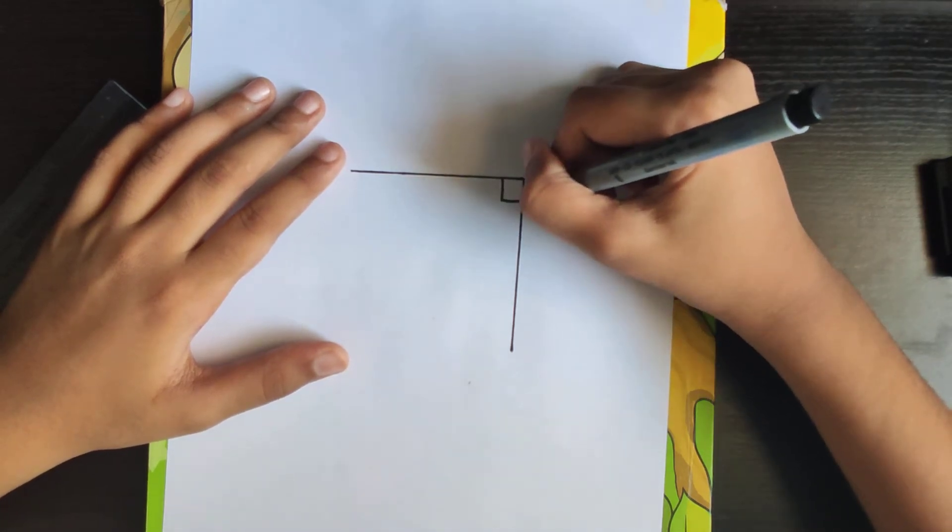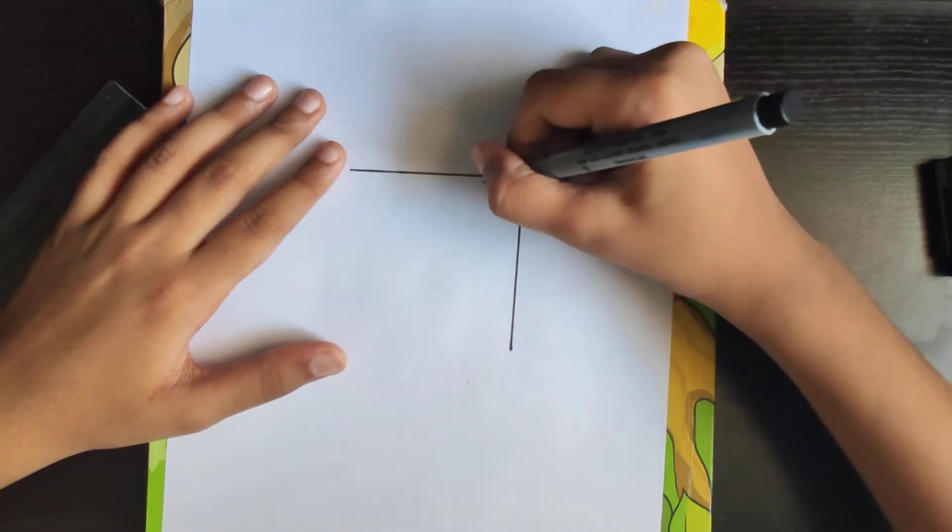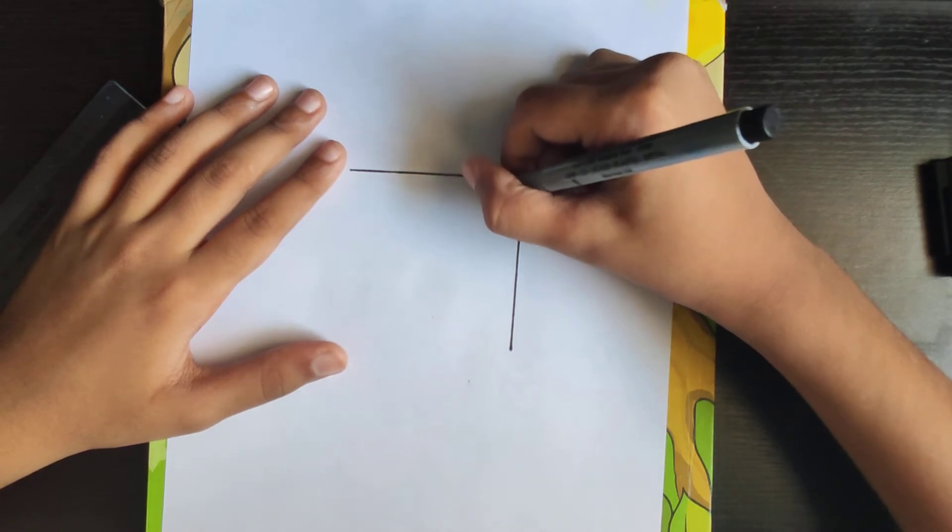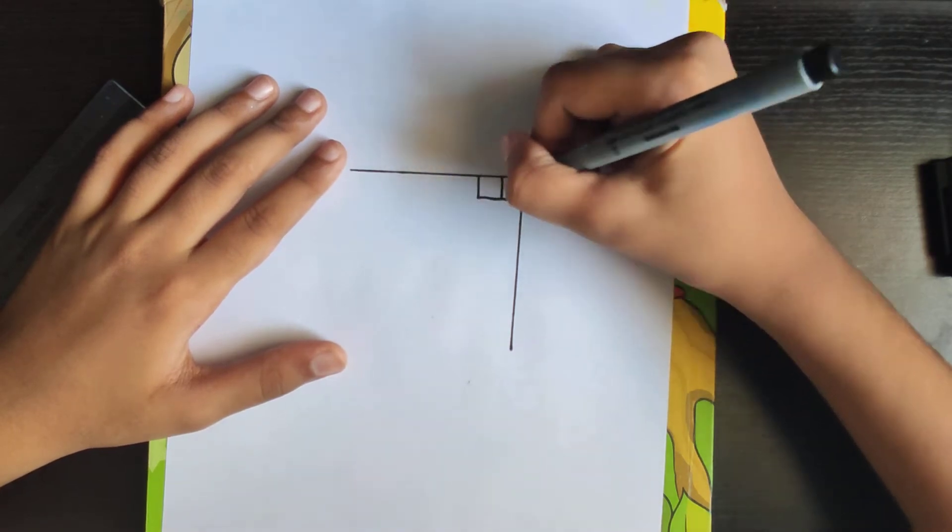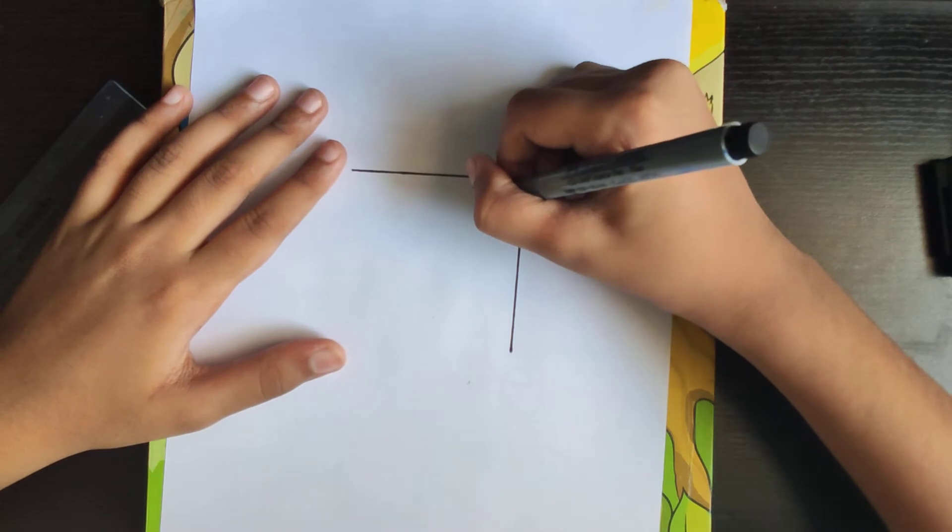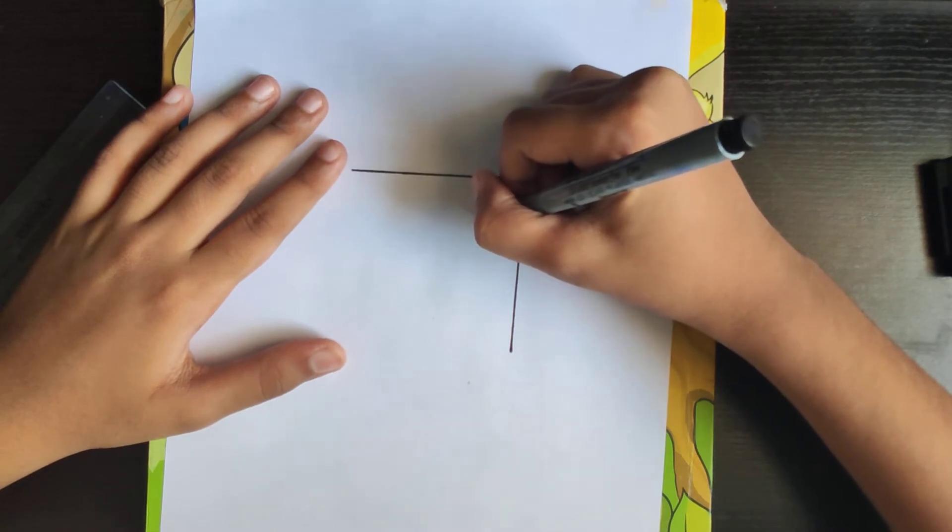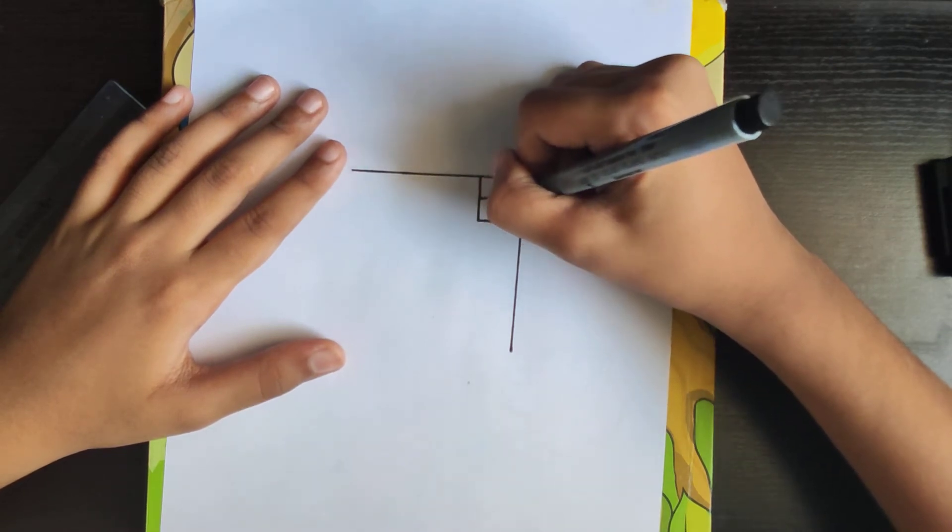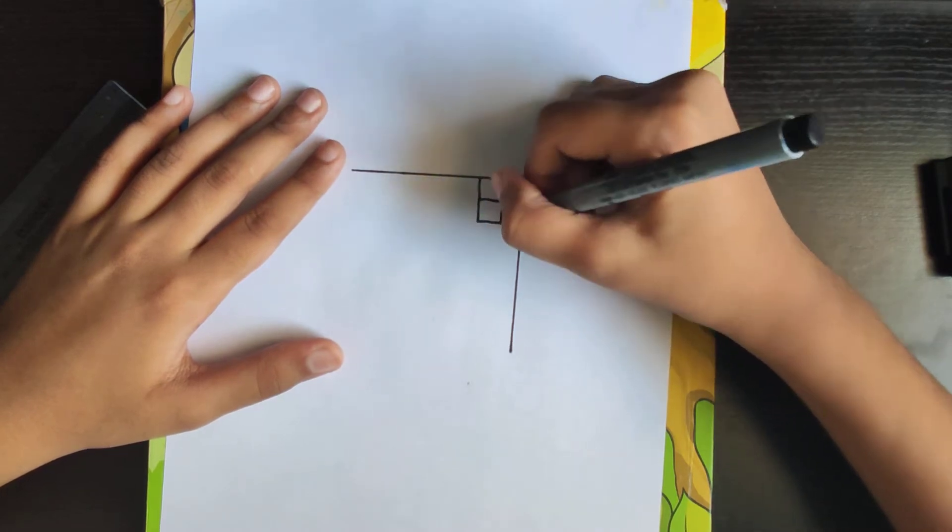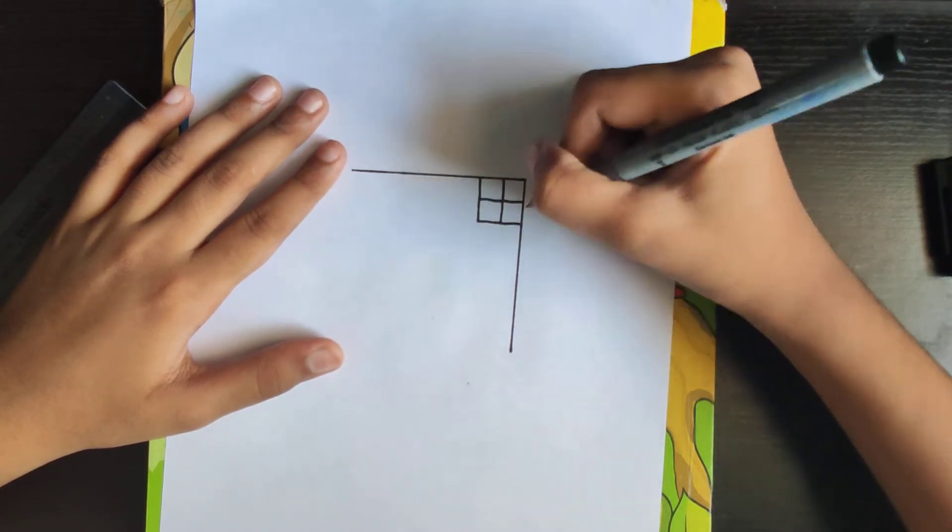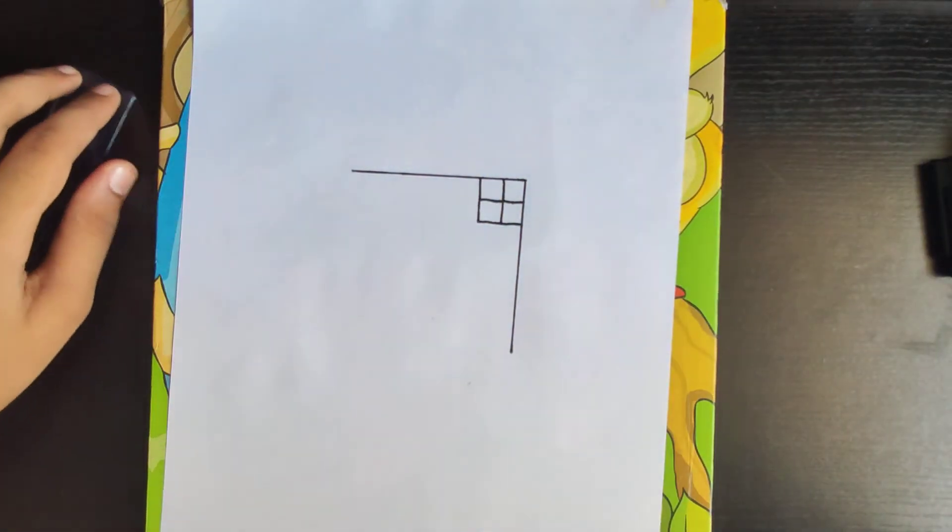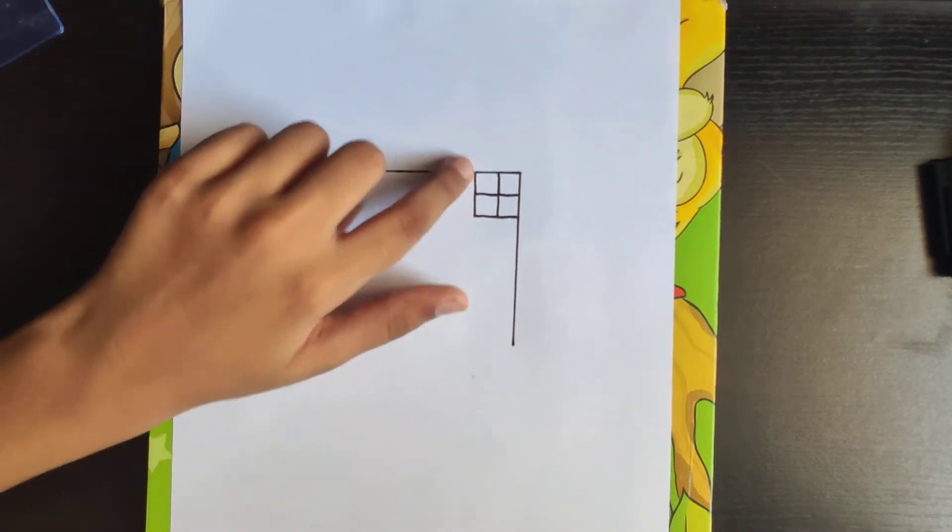Now make a square. Another one. Another square, and then the last one, like a window shape.